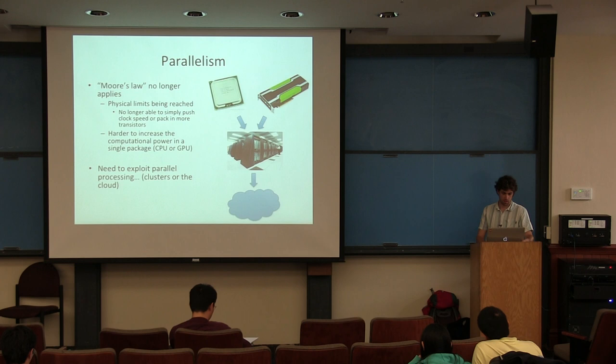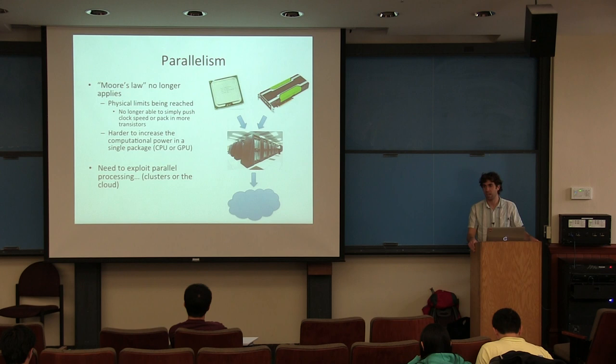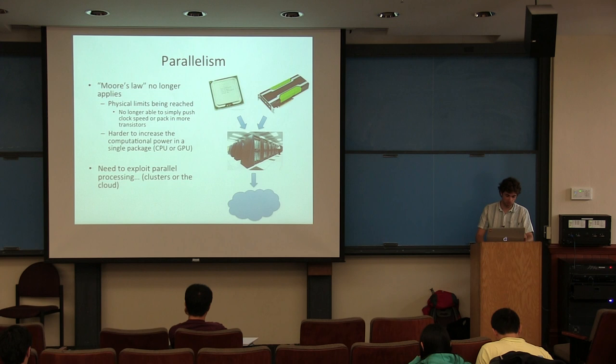So CPUs and GPUs are great for different applications, but ultimately we want to go parallel, because that's how we're going to scale up these systems. We don't want to be stuck generating a translation model over 10 days, because we're going to have more data, more complicated models, and it's just going to be slower as time goes on. So we need to exploit parallel processing — even clusters or the cloud.